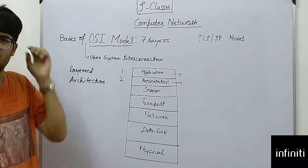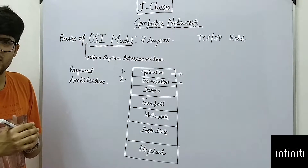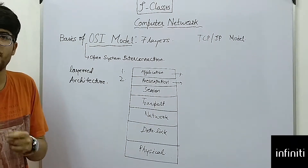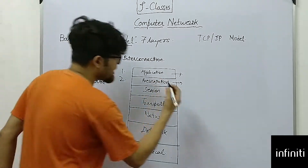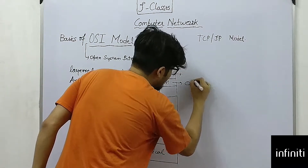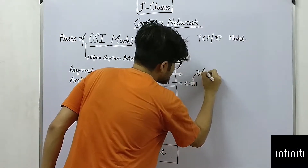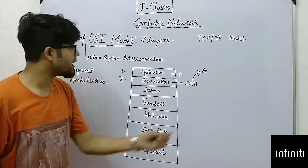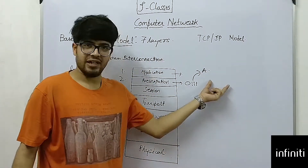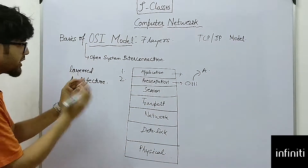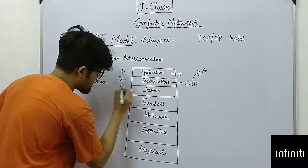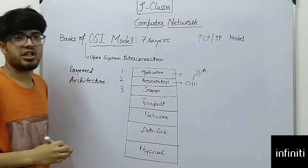Next comes the presentation layer. The presentation layer deals with data encoding, data encryption, and all those parts which actually protect a network from being hacked. For instance, you might represent the binary sequence '011' as 'A' — that is your secret code. This is the importance of the presentation layer.